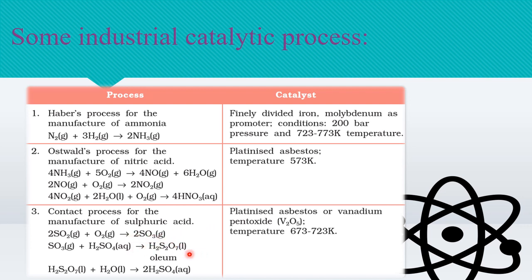Next is the contact process for the manufacture of sulfuric acid. First, oleum is produced and then we convert the oleum into sulfuric acid. The reaction is very exothermic, so we lower down the temperature by producing oleum first.